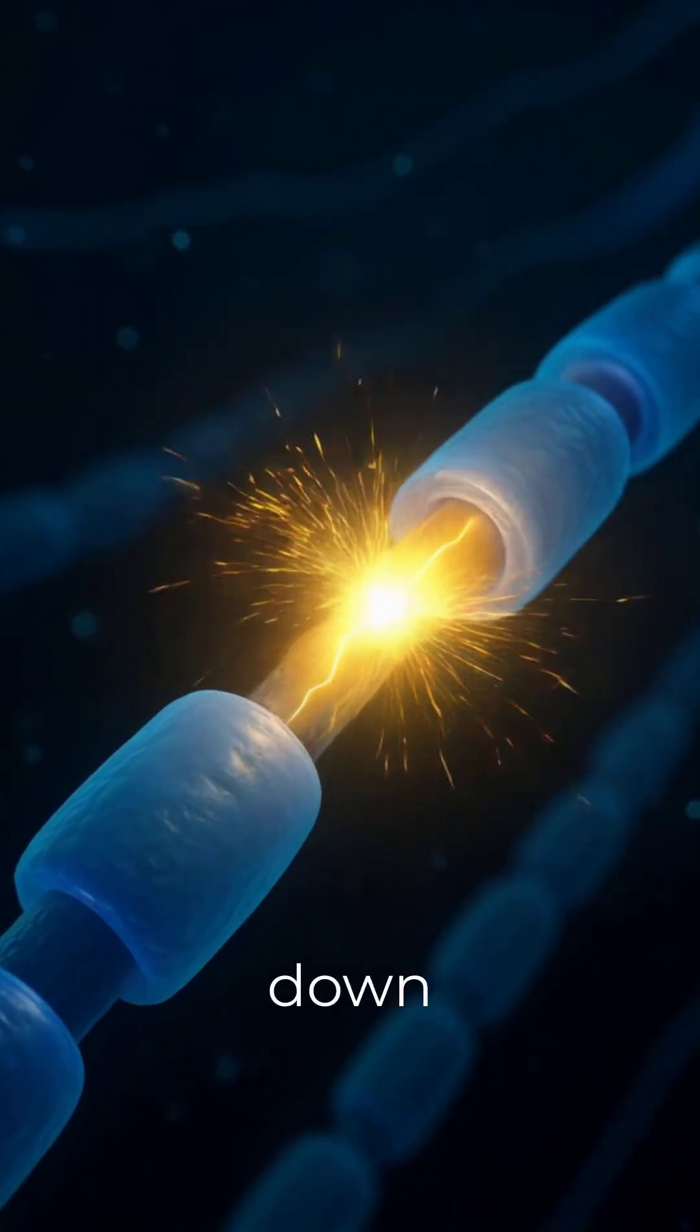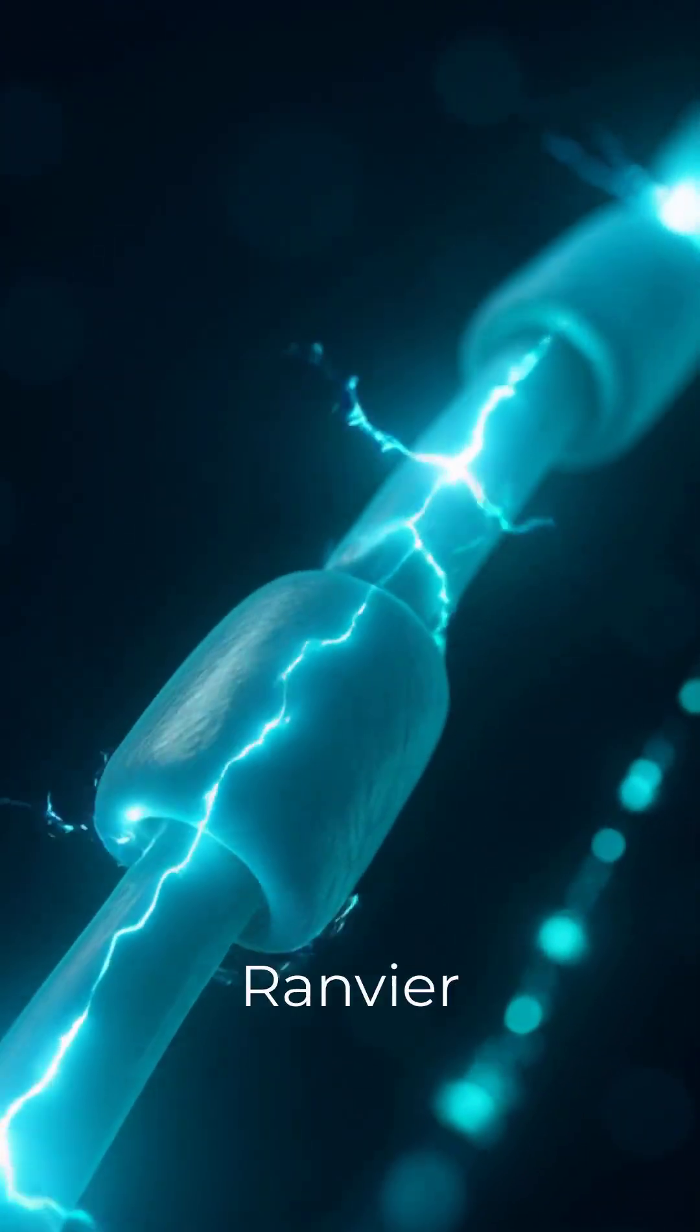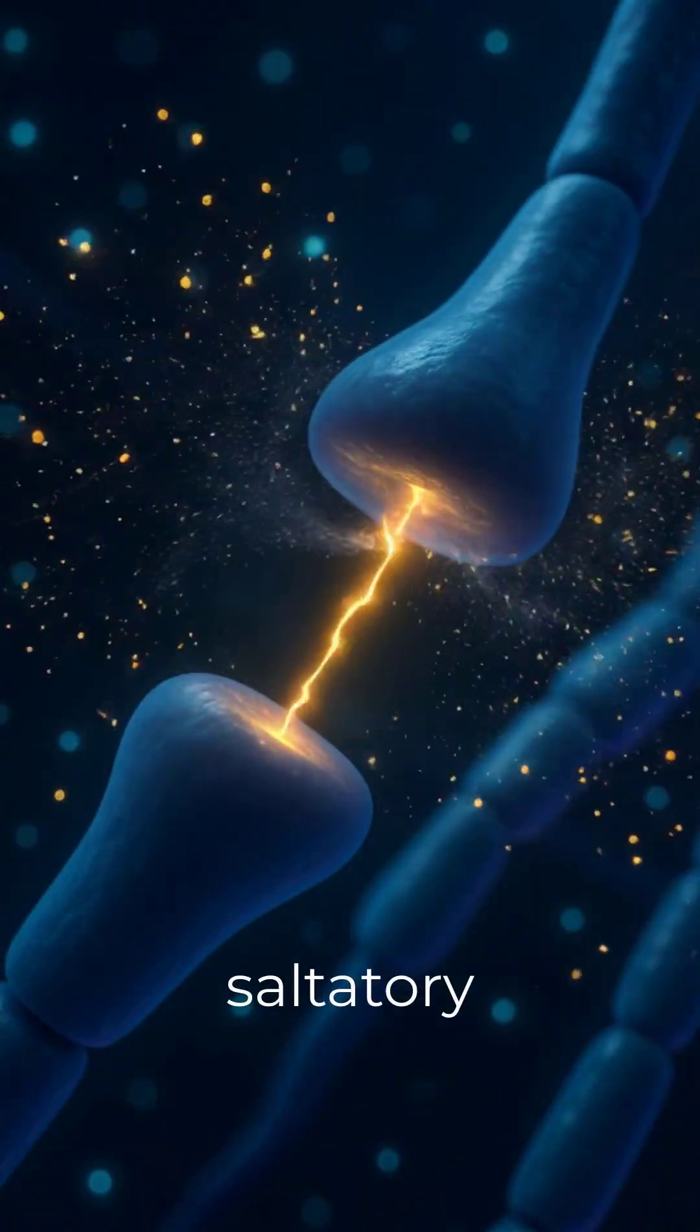The impulse races down the axon. If there's myelin, it jumps like lightning between the nodes of Ranvier. That's saltatory conduction.